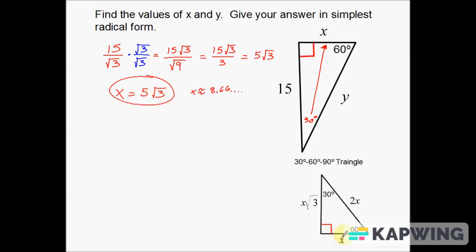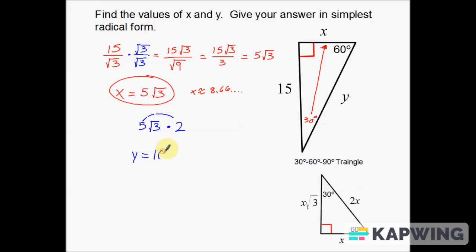From the shorter leg to the hypotenuse, all I need to do is multiply by 2. So for y, I take 5 root 3 and multiply by 2. When you multiply something like this by 2, it's only the numbers on the outside that affect each other — this 2 is not going to multiply with the square root of 3 inside. So y is simply 10 root 3.